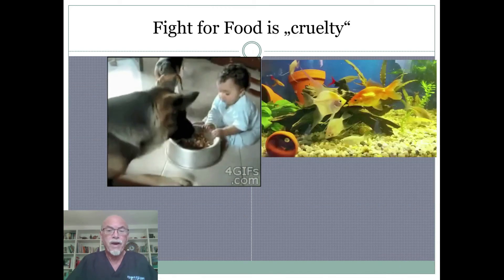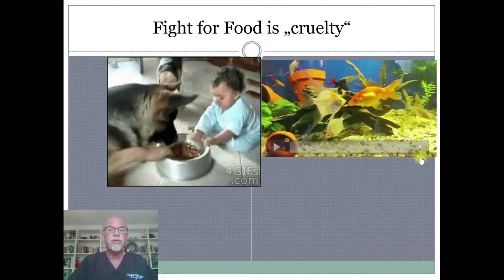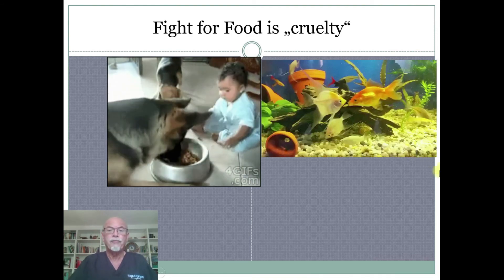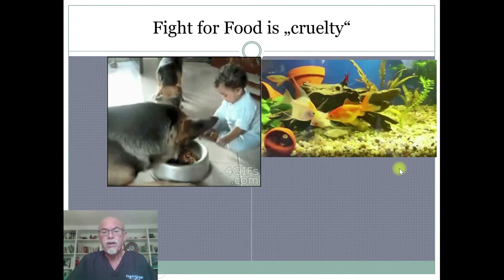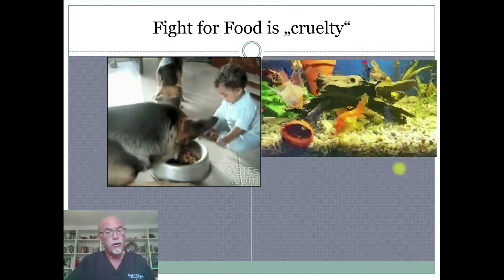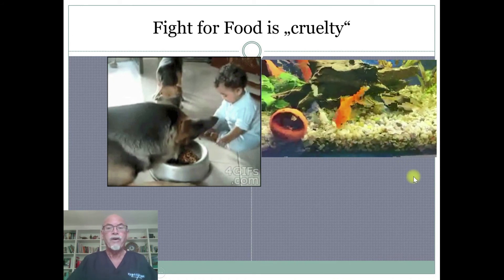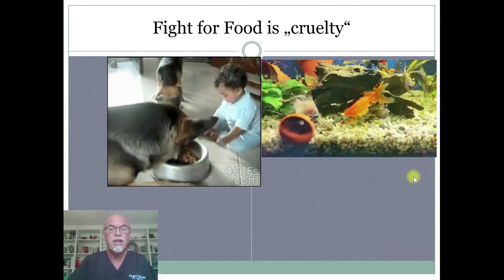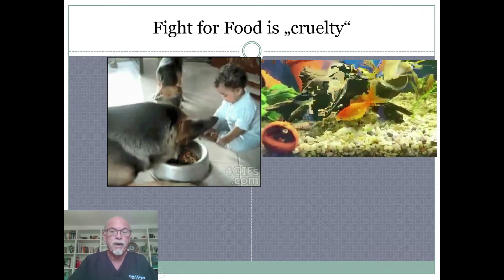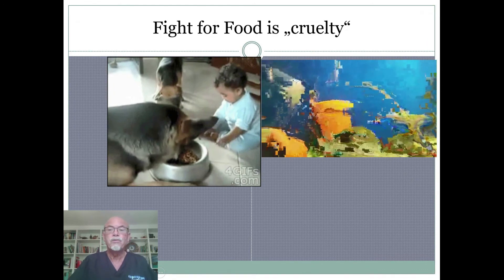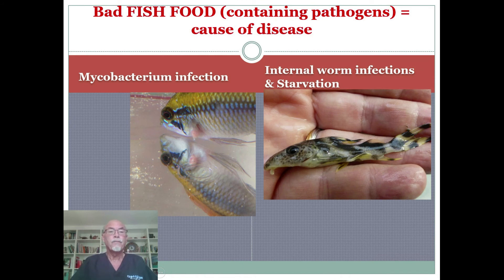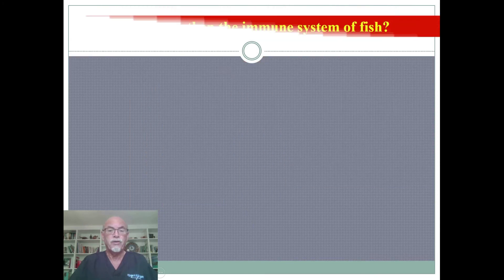Food is an important factor and fighting over food should be prevented. Here we see the cruelty of food — a fight for food. Are you aware that this fight is a cruelty? The weaker and smaller fish have no chance to obtain food, and the big one goes away with it. Bad fish food is also a cause of disease, introducing pathogens like mycobacterium or worm infections — this can all be caused by feeding fish.